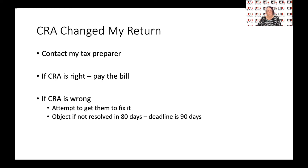So, to summarize: if CRA changes your return and you don't have a tax preparer — if they're correct, pay the bill. If they're not correct, you need to file a Notice of Objection within 90 days if you can't get it resolved within that time period.